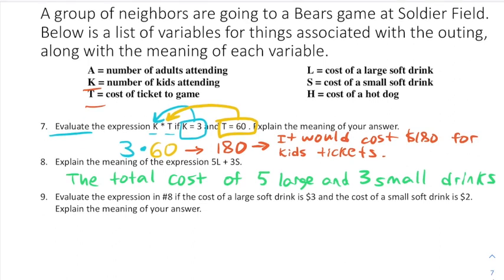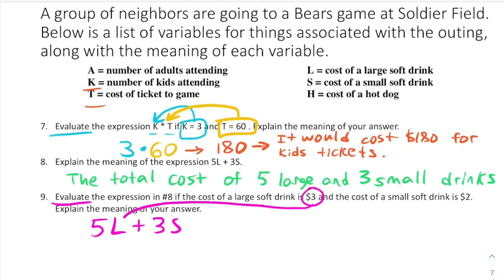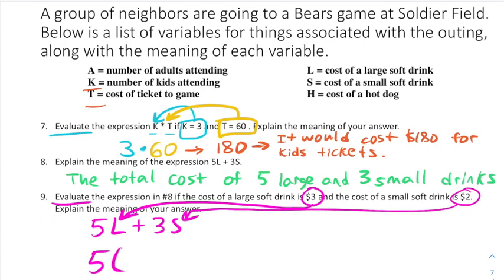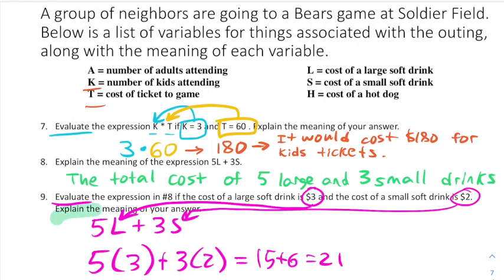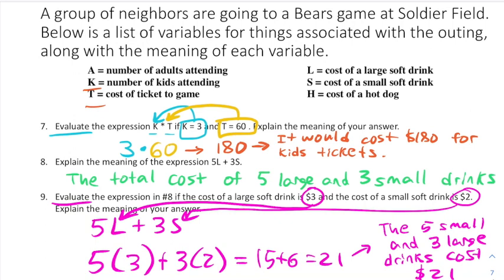Now evaluate 5L plus 3S where the cost of a large soft drink is $3 and the cost of a small soft drink is $2. Evaluate means plug in, so we get 5 times 3 plus 3 times 2, which equals 15 plus 6, equals 21. Don't forget to explain the meaning: the total cost of 5 large and 3 small drinks is $21.